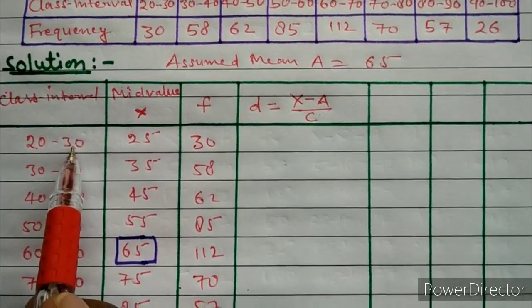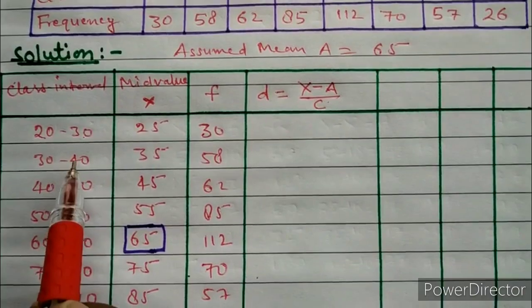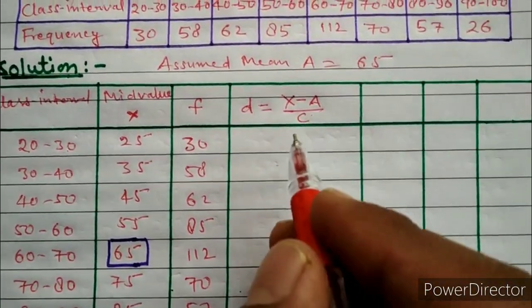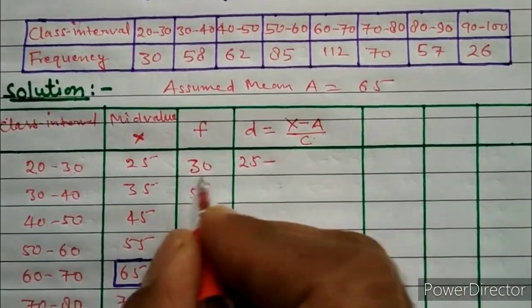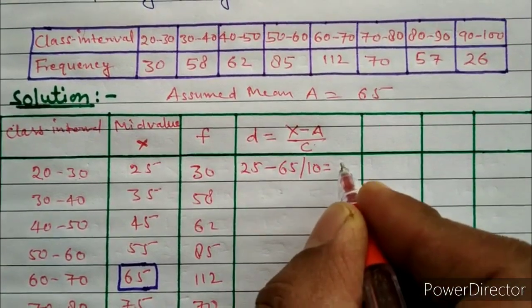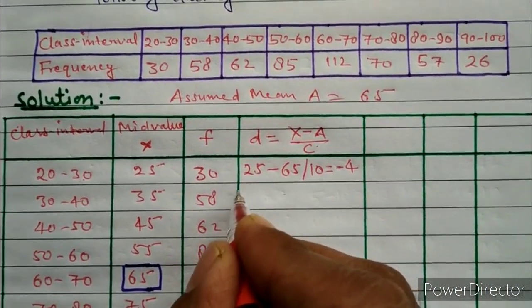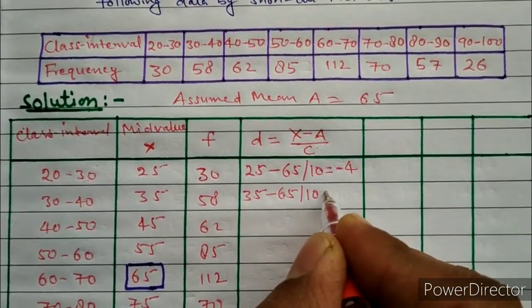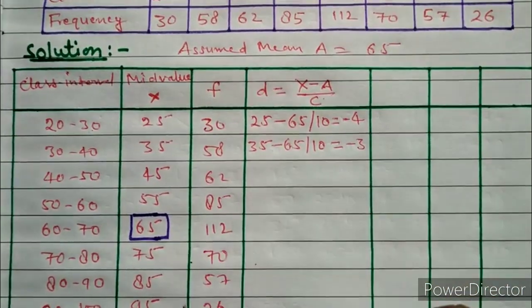Now we will calculate d for each value. For x equals 25: d equals 25 minus 65 divided by 10, giving minus 4. For x equals 35: d equals 35 minus 65 divided by 10, giving minus 3. Similarly we will calculate d for all remaining values in this column.